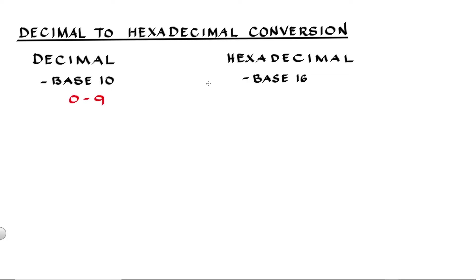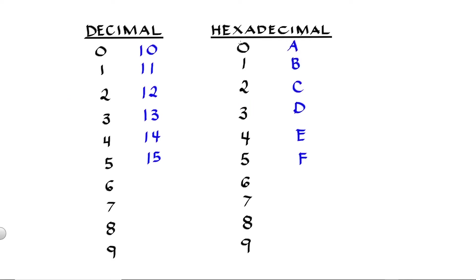Hexadecimal is composed of two words: hexa and decimal. Hexa corresponds to 6 and decimal corresponds to 10. 6 plus 10 is equal to 16, so hexadecimal is a base 16 number system. Hexadecimal uses the same digits as decimal from 0 to 9.